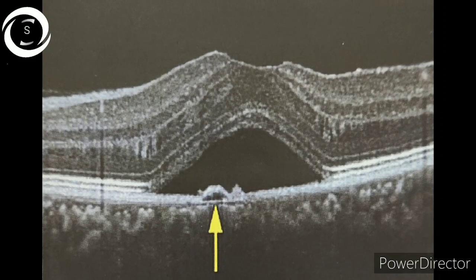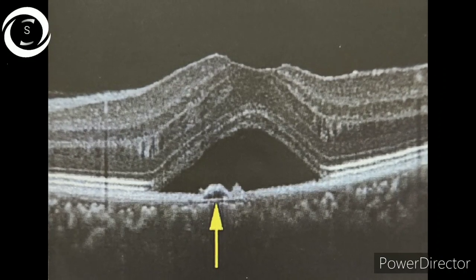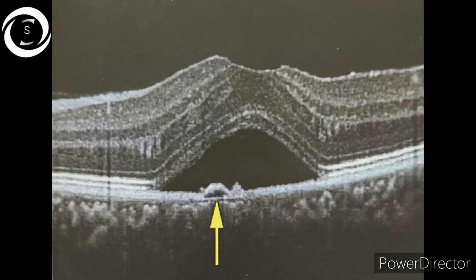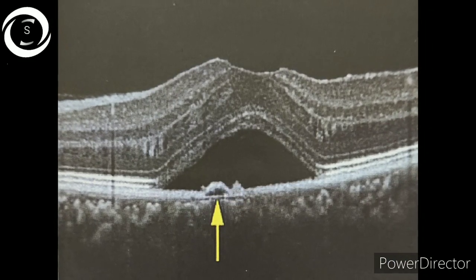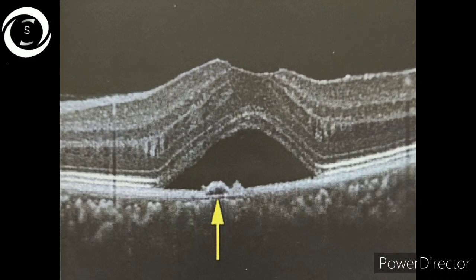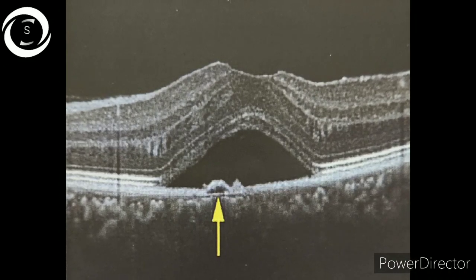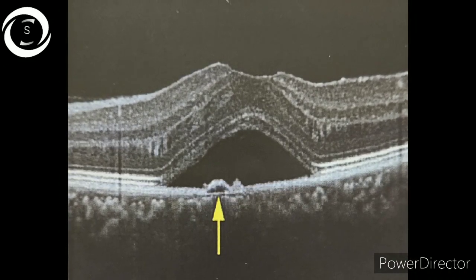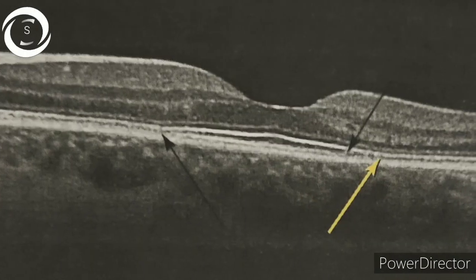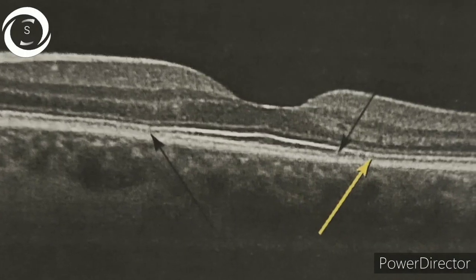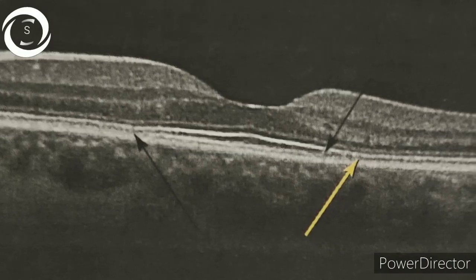In the seventh OCT, you can see a classic dome-shaped serous detachment of the neurosensory retina with a hyper-reflective space and also a small PED. This is the OCT of central serous chorioretinopathy.